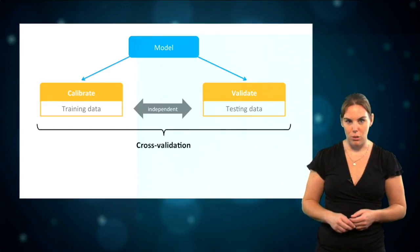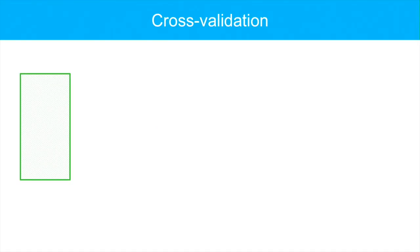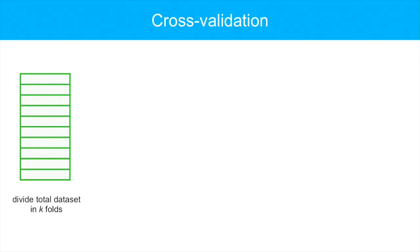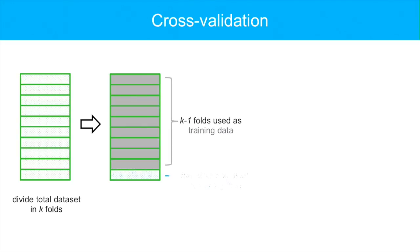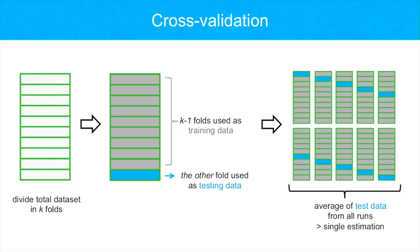A common approach used to achieve this is cross-validation. In cross-validation, the total dataset — which means all your records of presences and absences of a species — is divided into a predefined number of subsets, also called folds. The model is calibrated with all but one of the folds, and the fold that is not used in calibration is used for validation. This process is repeated as many times as the number of folds — so in this example 10 times — and each of the folds is used once as the testing dataset. The results obtained with the testing data from all 10 runs are then averaged to produce a single estimation.